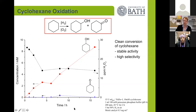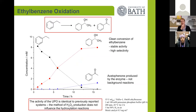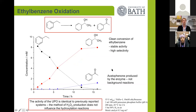We then started to extend the substrate scope. Taking ethylbenzene over 16 hours, we can convert it selectively into 1-phenylethanol with very little over-oxidation to acetophenone. So we have very selective CH activation and very stable activity.